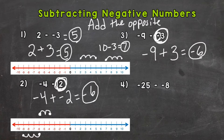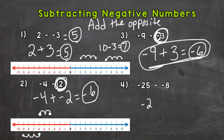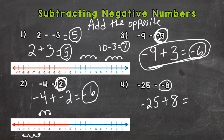For number four, we have negative 25. We change to addition and change the negative eight to its opposite, which gives us positive eight. Adding the opposite: negative 25 plus positive eight gives us negative 17.